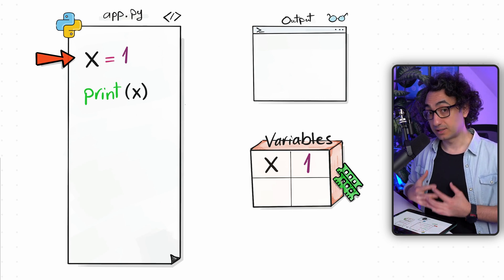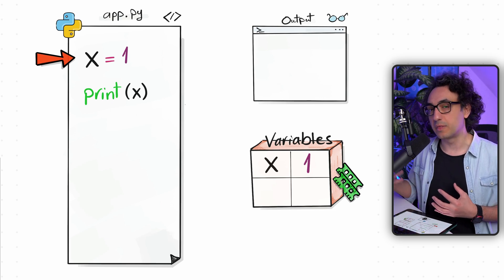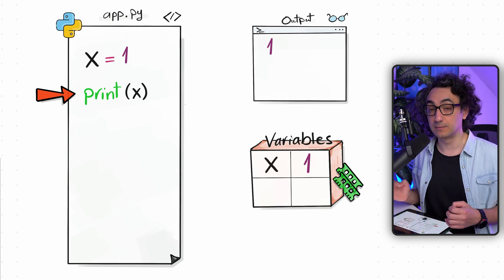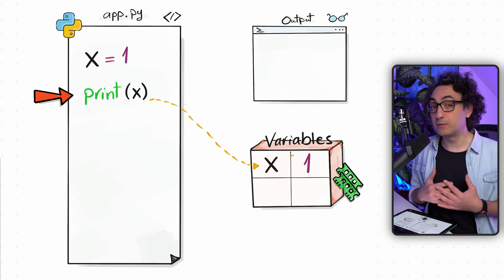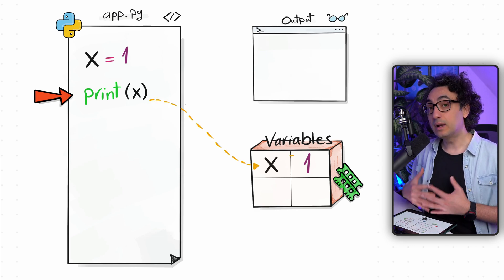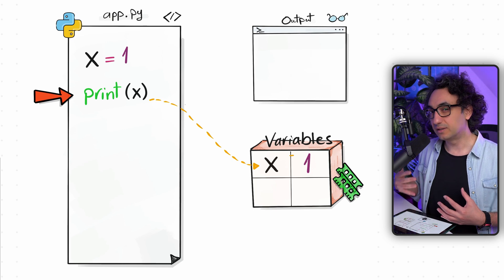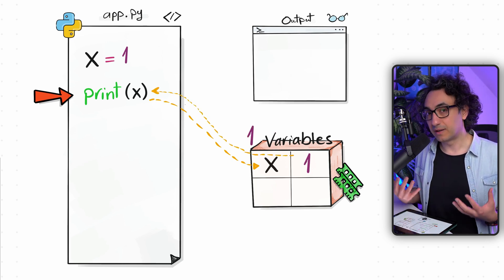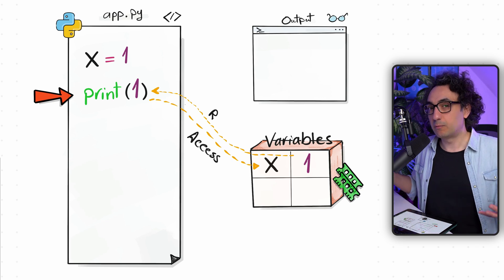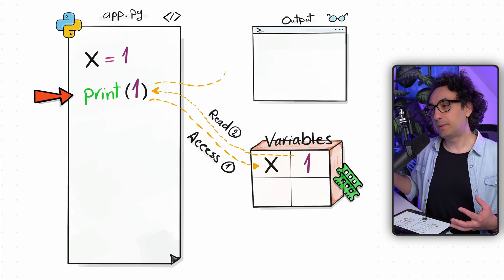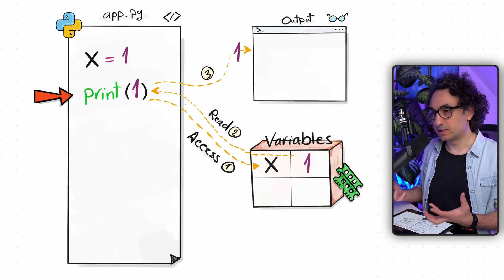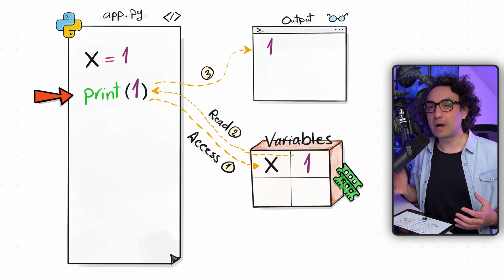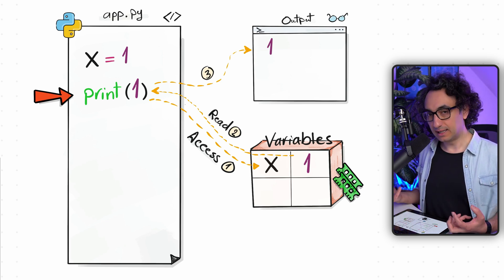Python cannot immediately print the value in the output. First, Python has to go and get the value of the variable, so it searches in the memory for a variable called x, finds it, and returns its value. During the execution, instead of having x we're going to have one. Now Python has everything ready for the print, so it prints one in the output. This is exactly how we work with variables: create one, assign it a value, and reuse it later.